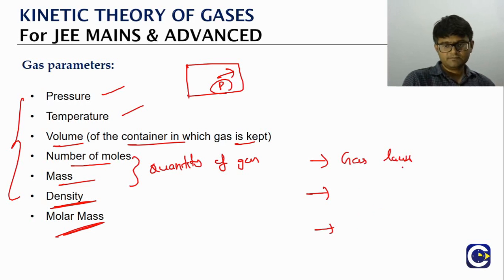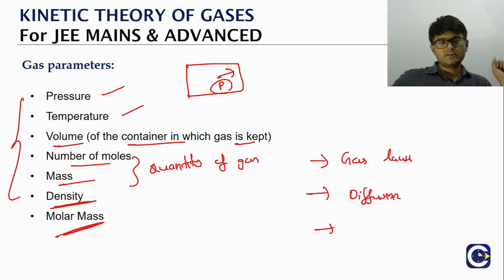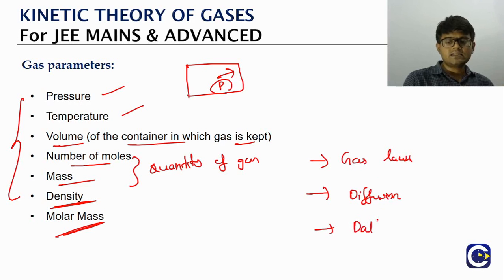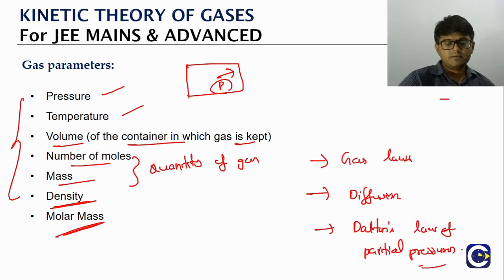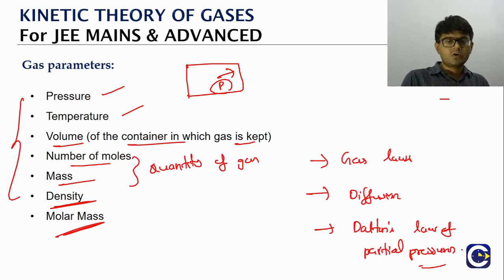The three macro behaviors we study are: first, the gas laws — Boyle's law, Charles' law, and their combination culminating in the ideal gas equation. Second, the diffusion law — diffusion is a phenomenon shown by gases. Third, Dalton's law of partial pressures, where we discuss how a mixture of gases exerts pressure.